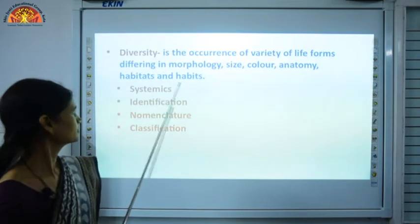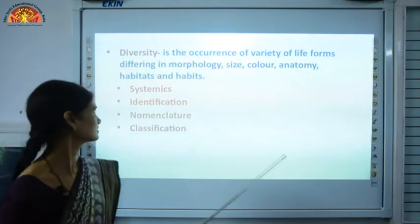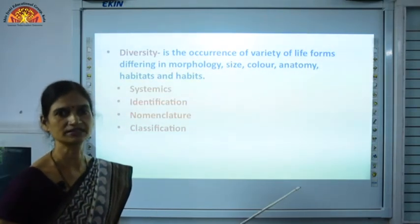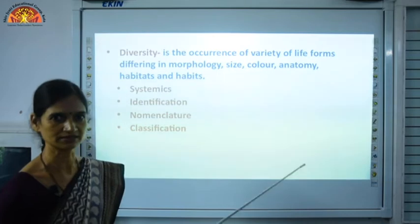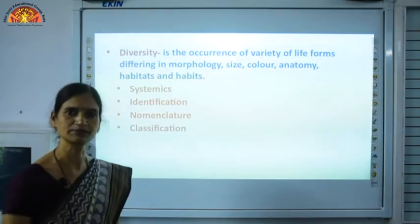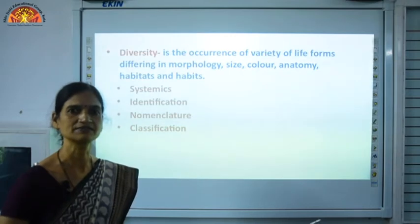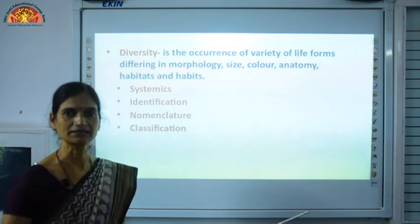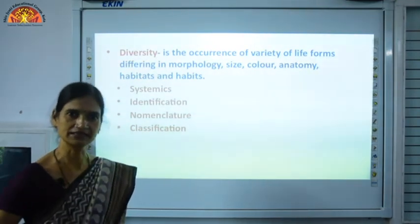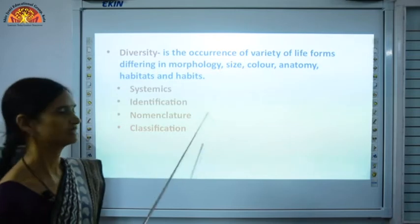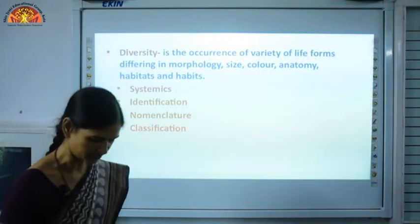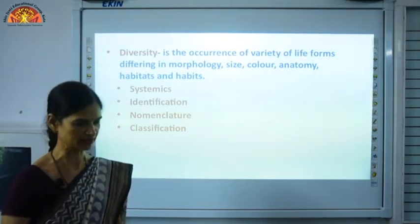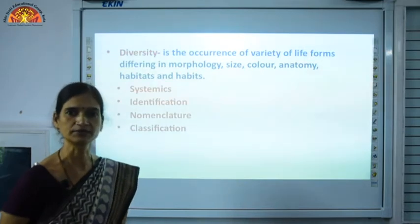When we classify animals or organisms, there is a term called systematics — systematics means to organize organisms in a systematic manner. There is identification: when we see any new organism, whether it is plant or animal, we want to identify it by looking at its features. Then there is nomenclature — on page number 6 of your book, the topic of binomial nomenclature is given in the last paragraph.